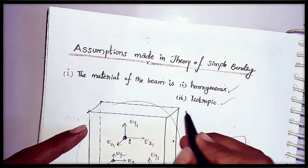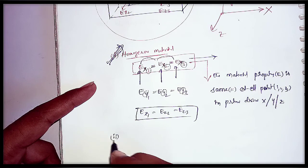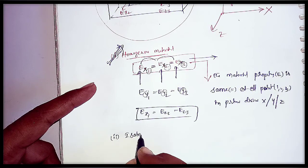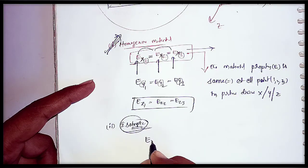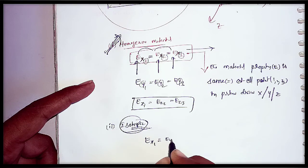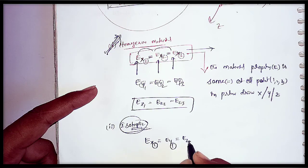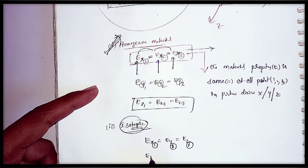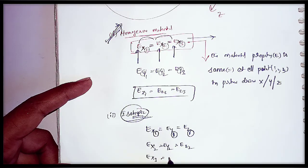The second one is isotropic material. For isotropic material, the condition is Ex1 = Ey1 = Ez1 — that means at a single point, the first point. You can also write it as Ex2 = Ey2 = Ez2, and Ex3 = Ey3 = Ez3.